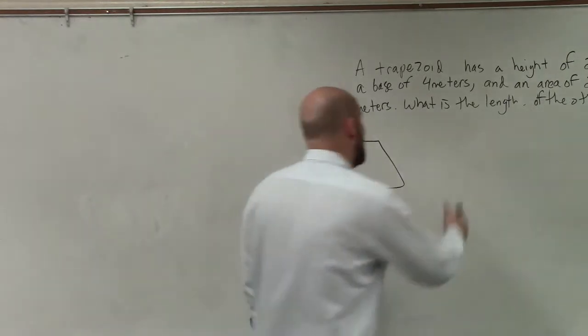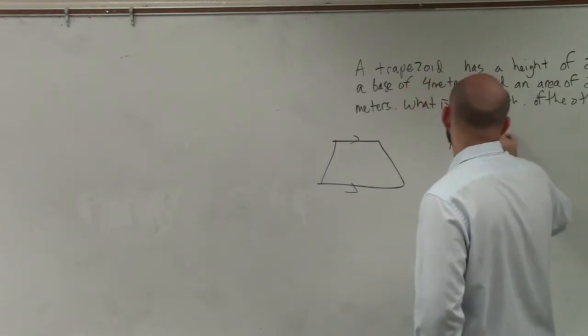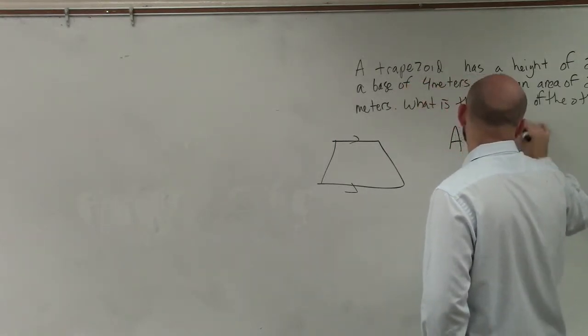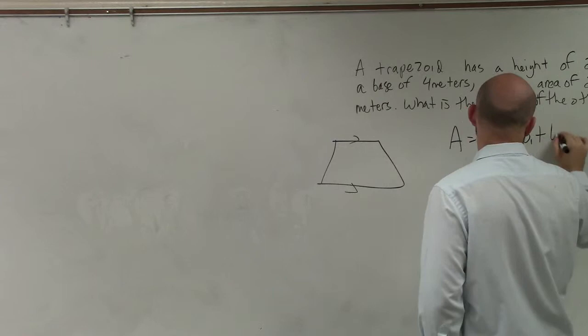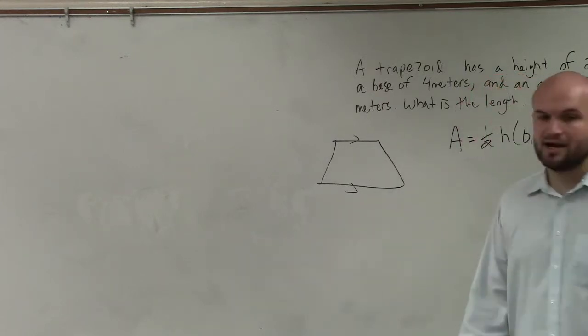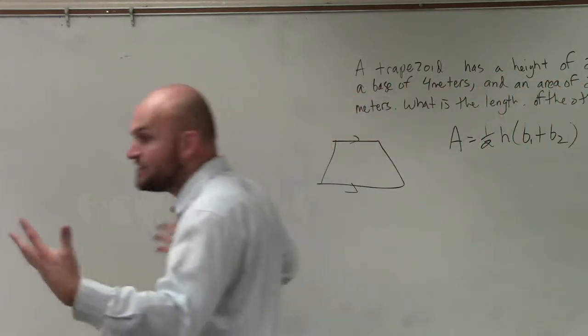That's what they're talking about. The area of a trapezoid is 1/2 height times base 1 plus base 2. Alright, so now let's just fill in the information we've been provided.